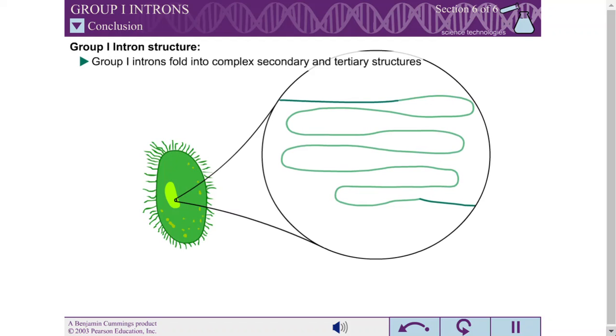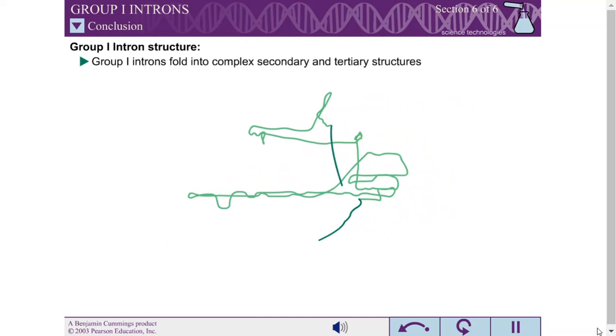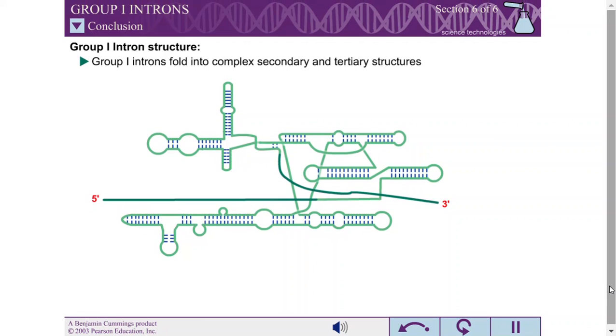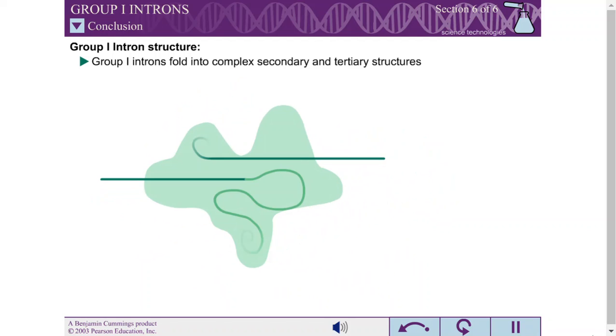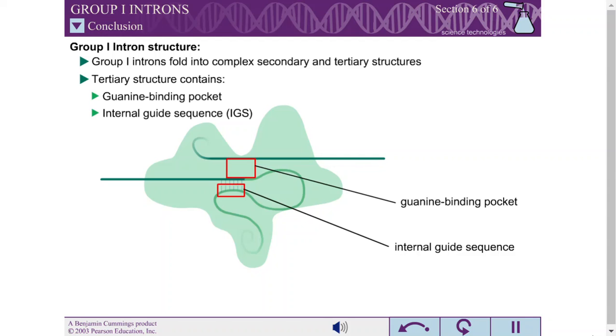Group 1 introns are catalytic RNA molecules, capable of splicing themselves out of an RNA transcript. Group 1 introns fold into complex secondary and tertiary structures. The tertiary structure contains two important features: a guanine binding pocket and an internal guide sequence.